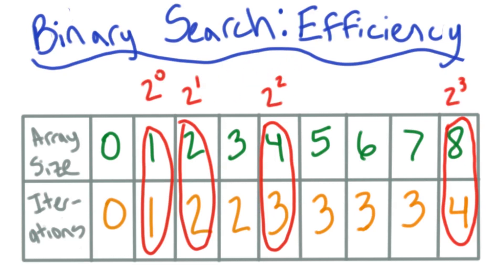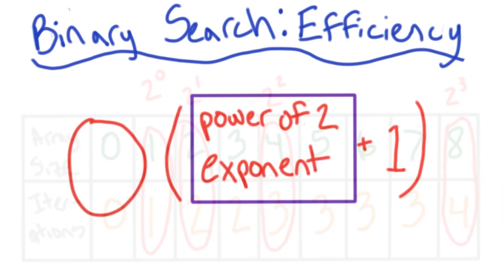Actually, when I represent these as exponents, I notice that the power on top of the 2 is always 1 more than the number of iterations it takes. So maybe my efficiency looks more like this. The number of overall iterations is going to increase every time the exponent on the power of 2 increases. And of course, it's only off by 1.